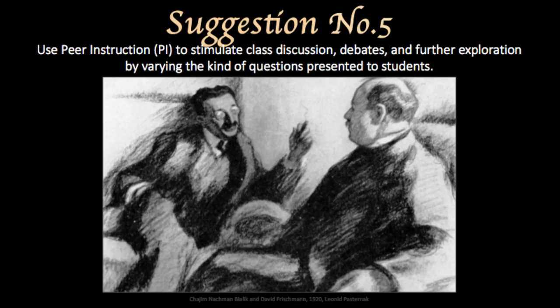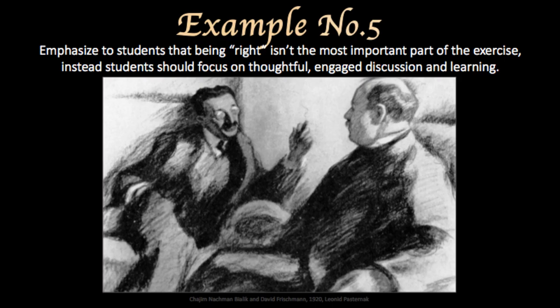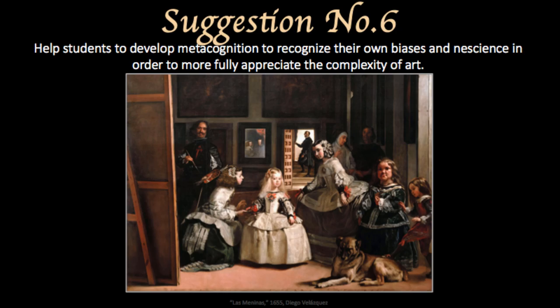Suggestion number five: peer instruction is one way to quiz students over information. However, it can also be used to stimulate class discussions, debates, or prompt further exploration by varying the kinds of questions presented to the students. Ask students questions they really have to think about with subjective or open-ended answers. Furthermore, PIs can be used to make a quiz into a lesson by asking students to write their answers as they go. Emphasize that the goal isn't necessarily to be right, but to really think about the content. Using discussion, students can gain insight into new perspectives they may not have otherwise considered.